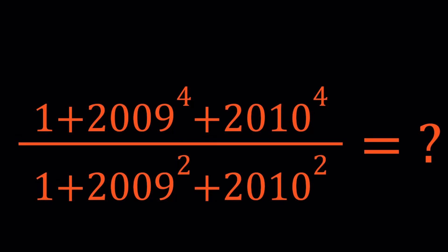Hello everyone. In this video, we're going to be simplifying a numerical expression. We have 1 plus 2009 to the 4th power plus 2010 to the 4th power divided by 1 plus 2009 squared plus 2010 squared.